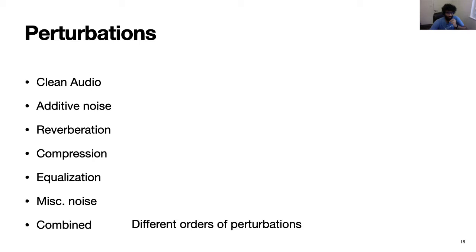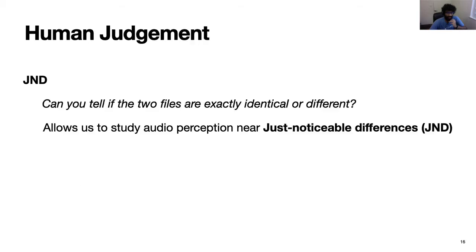And finally, let's look at a combined perturbation where we combine a variety of these perturbations we looked at. So in this example that you'll hear, we combined pops, reverberation, and white noise. So now that we have the perturbation system set up, how do we actually collect samples from this space?